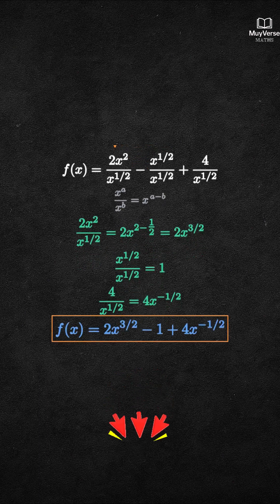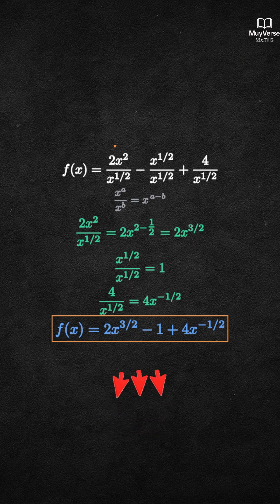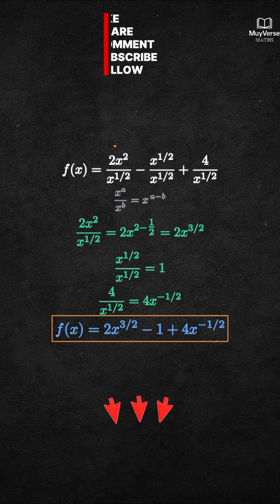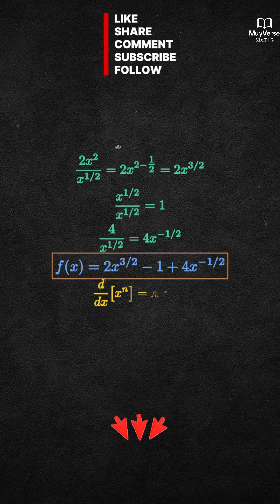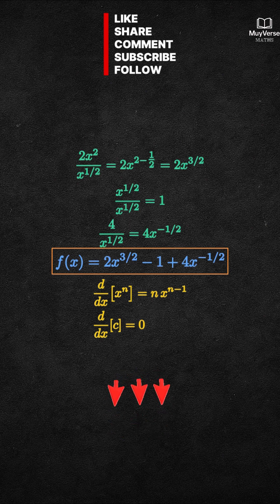Step 2: Differentiate term by term. We'll use the power rule: the derivative of x to the n is n times x to the n minus 1, and the constant rule: the derivative of a constant is 0. Differentiating the first term, the derivative of 2x to the 3 halves is 2 times 3 halves times x to the 1 half, which simplifies to 3x to the 1 half.